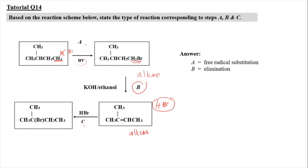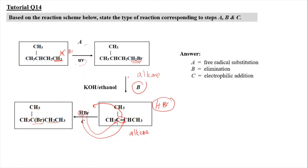For part C, HBr is added again. Br is substituted on one side and H on the other, giving CH₂ and CBr. This is an addition reaction — specifically an electrophilic addition reaction, because it starts from the nucleophile attacking the electrophile, meaning the electrophile is being added into the system. The detailed mechanisms of B and C will be covered in the next chapter.